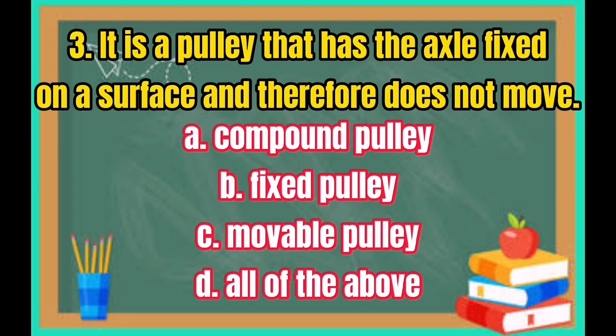Number 3: It is a pulley that has the axle fixed on a surface and therefore does not move. A. Compound pulley. B. Fixed pulley. C. Movable pulley. D. All of the above.